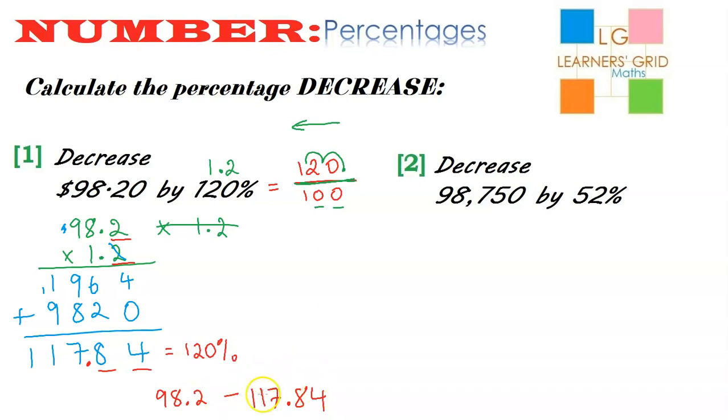So what I tend to do is, I just swap that around so that this number goes first. So 117.84. And then I subtract this original amount, 98.2. Now this is the wrong way around, but it will give me the right answer as long as I make sure that I remember that the answer is a negative answer. And then I can just do my subtraction.